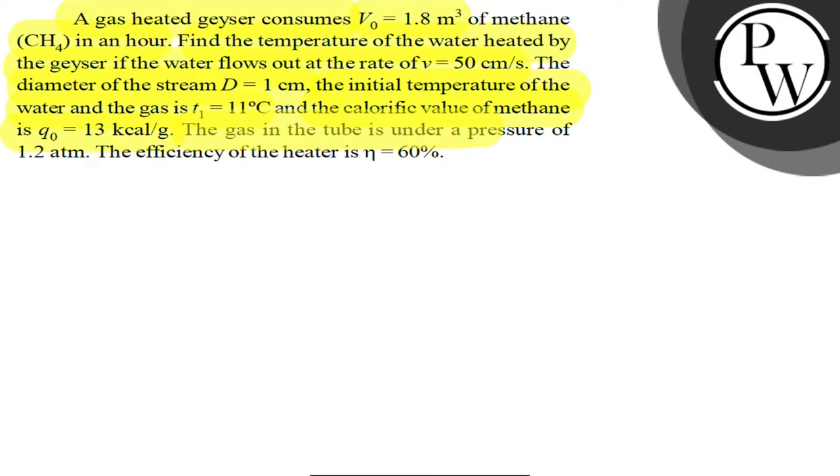The gas in the tube is under a pressure of 1.2 atm. Efficiency of the heater is 60%. The heat energy produced in the heater, 60% of the heat is going to heat the water. First of all, you can understand the stream of the water. It is in here and it is out.